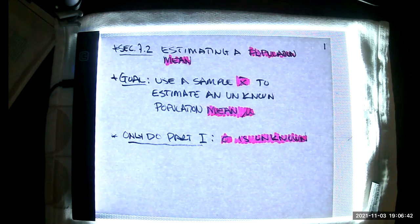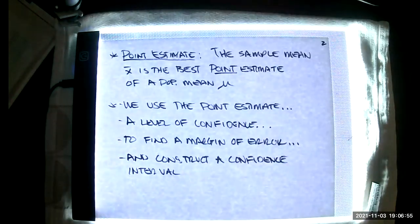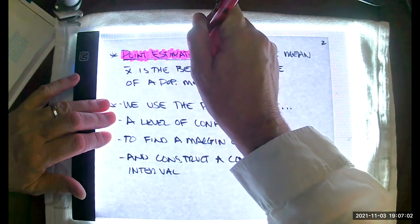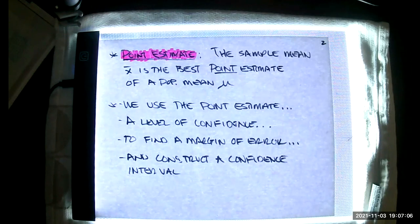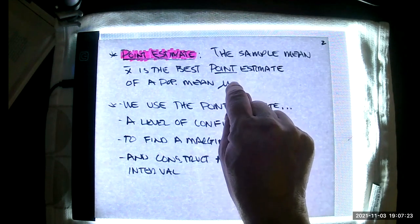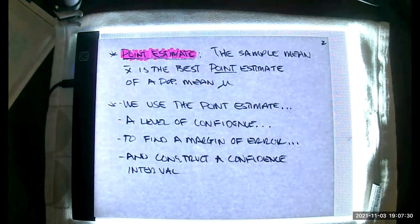Let me dip back into the vocabulary. Hopefully this will be a bit of a reminder because it mirrors what we saw in section 7.1. First up is the point estimate. The point estimate is the best estimate that we have of a population parameter. In this case, the sample mean x bar is the best point estimate of a population mean mu.